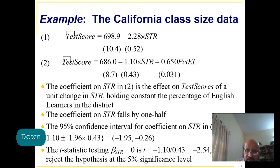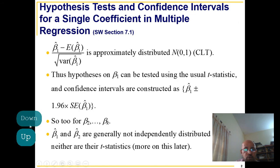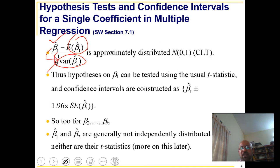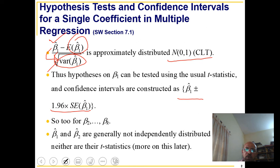For individual coefficients, you always have your sample statistic and the theoretical value divided by the standard error. For large samples, the central limit theorem applies and it follows a normal distribution. Confidence intervals are as usual: beta_2, beta_3, beta_4, beta_k — so each individual coefficient can be tested the same way.